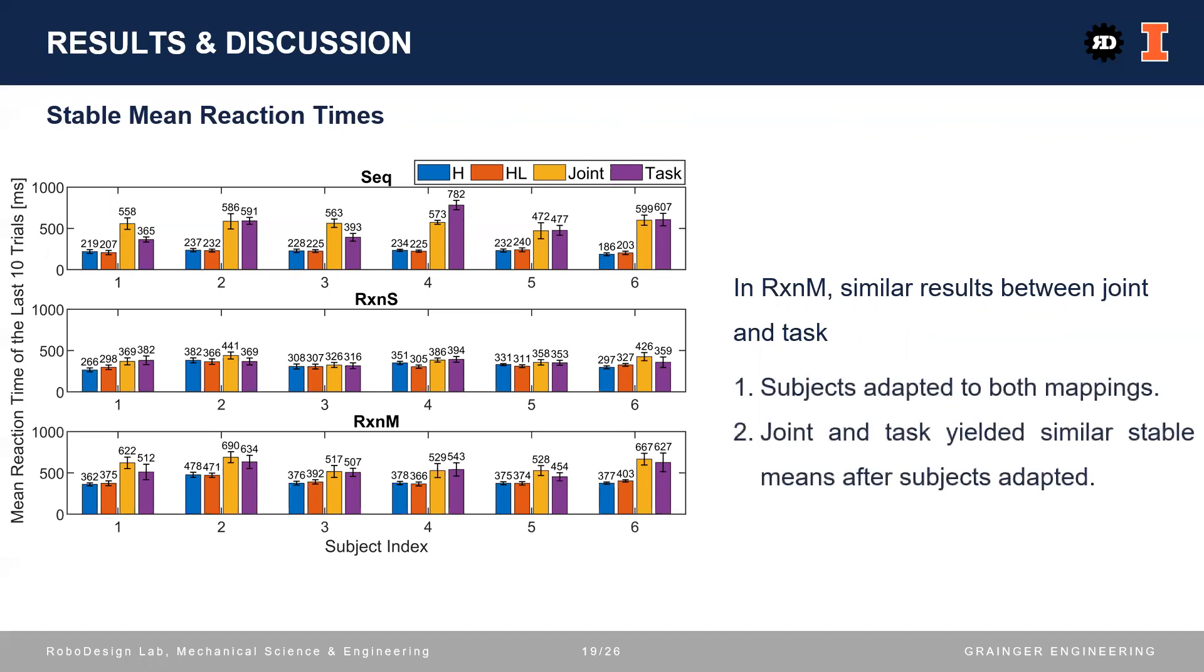Hence, we can have the following observations. First, all subjects adapted to both mappings after sufficient practice. Second, the two mappings yielded similar stable mean reaction times after the adaptation.